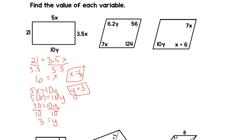We can say the same thing about opposite angles are congruent. We can say 7X equals 56, and divide by 7, and get X is 8. And we can say 6.2Y equals 124, divide by 6.2 to get Y alone, and Y is 20.